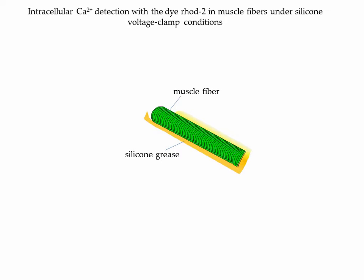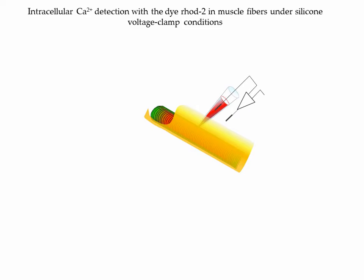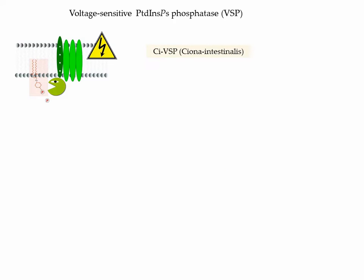We need to control the membrane voltage of the muscle fiber and to measure SR-calcium release. For this, we're using the silicone voltage clamp technique, which consists in having a single muscle fiber sitting on a layer of silicone grease. The fiber is then painted with more silicone so that only a short end portion of the fiber is exposed. We then have a micropipette filled with an intracellular medium containing the calcium-sensitive dye Rhod2 together with EGTA to prevent contraction. The tip of the micropipette is inserted in the fiber through the silicone, and we wait for the dye to diffuse. When the dye has equilibrated, we take fluorescence measurements using a confocal microscope in line scan mode and measure calcium transients triggered by voltage clamp depolarization. In most of our experiments, we expressed a VSP called CI-VSP, initially isolated from the tunicate Ciona intestinalis.